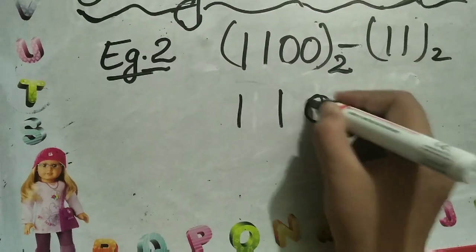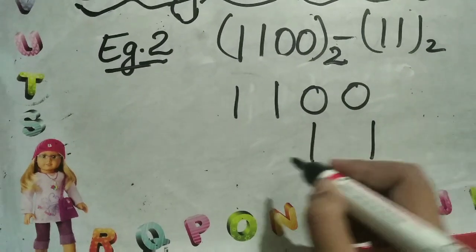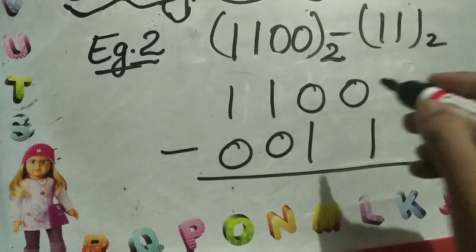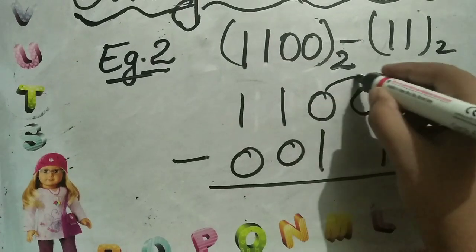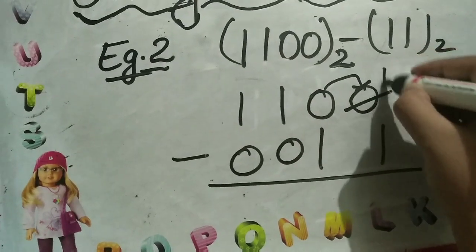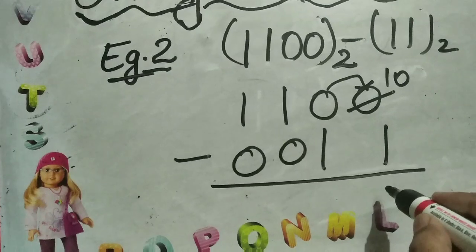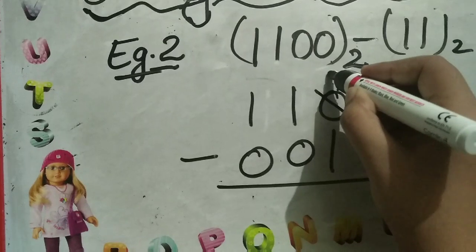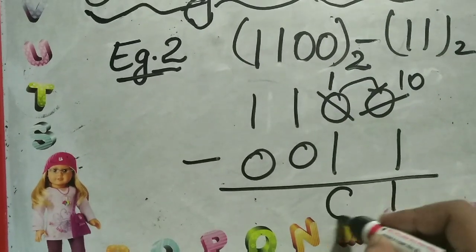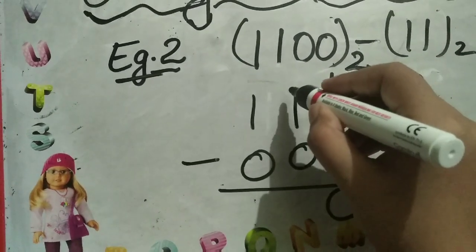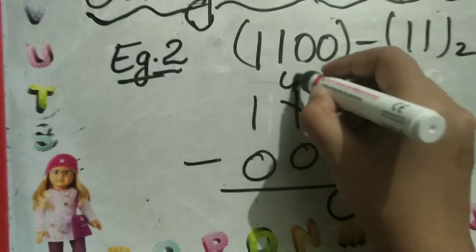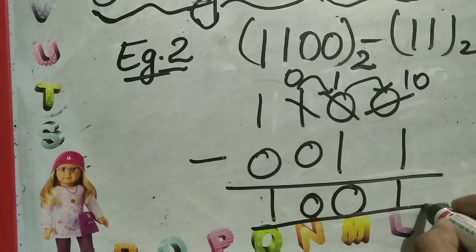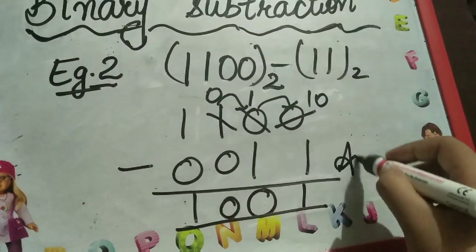Let us take another example: 1100 minus 11. The places where numbers are not present, we put 0. Now 0 will borrow since it cannot subtract 1, so it becomes 10, which equals 2. 2 minus 1 is 1. This 0 has given, so it becomes 1 less — earlier it was 10, it becomes 1. 1 minus 1 is 0. This also has given so it becomes 0. 0 minus 0 is 0, and 1 minus 0 is 1. So our answer is 1001.